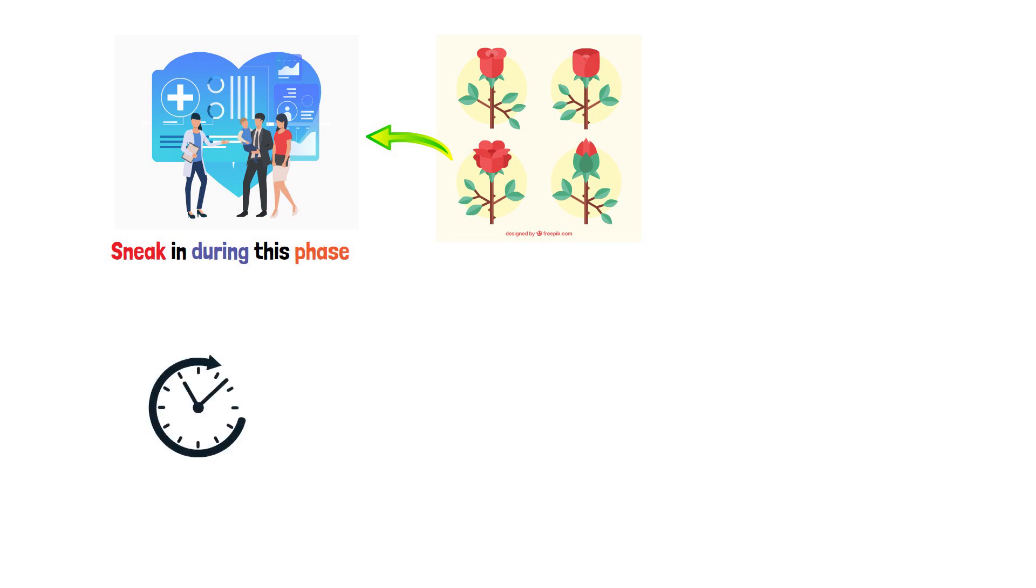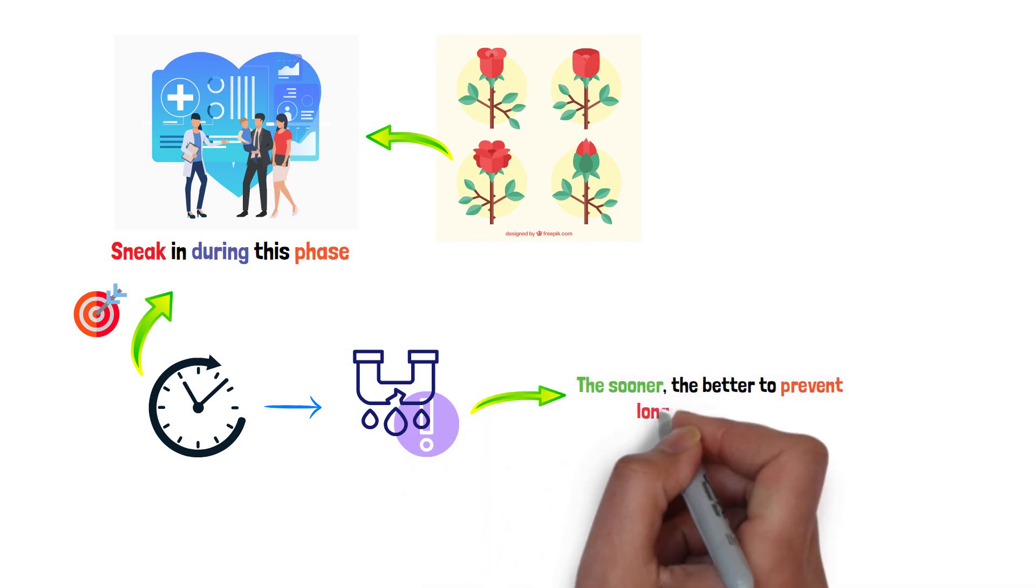But alas, every rose garden has its thorns. Common health issues also sneak in during this phase. The timing of addressing such issues is crucial. It's like fixing a leak in a dam. The sooner, the better to prevent long-term impact.